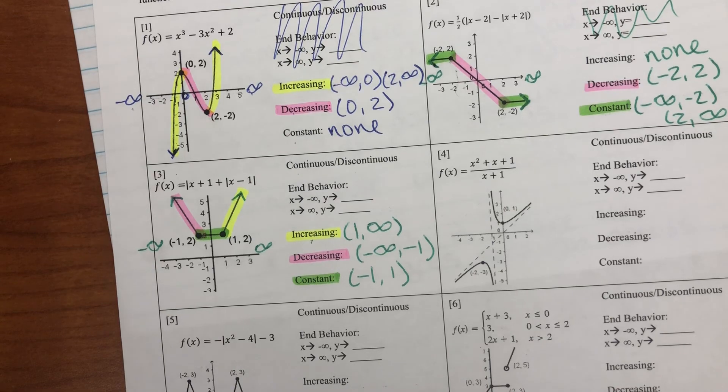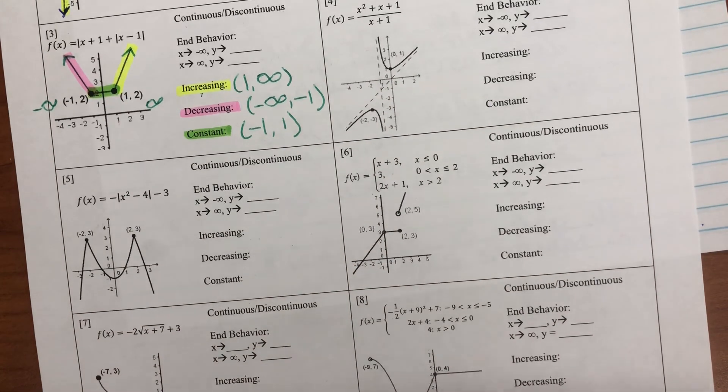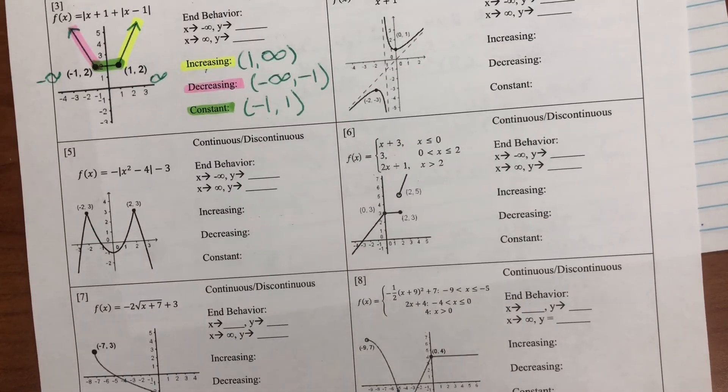That is the lesson for today. Increasing, decreasing, constant intervals. Now in Google Classroom, you have four, five, six, seven, and eight to complete. And then turn that in when you are finished.